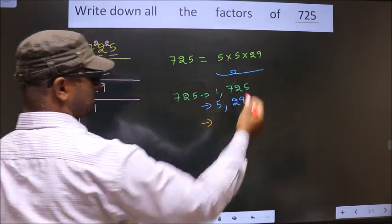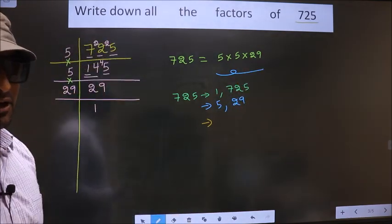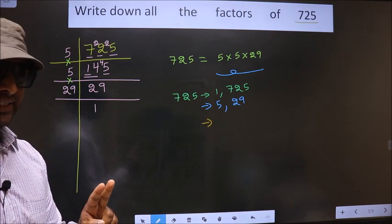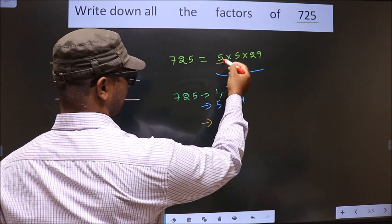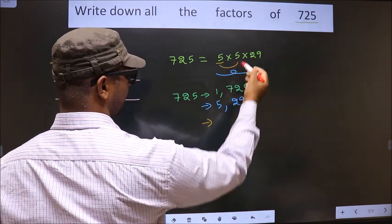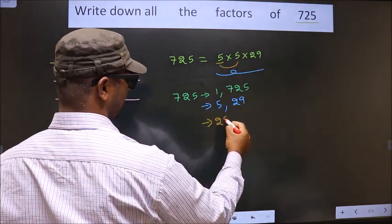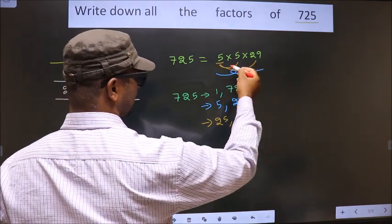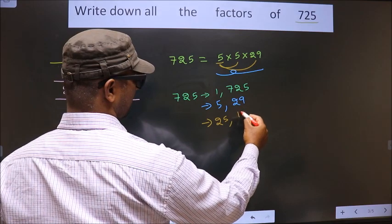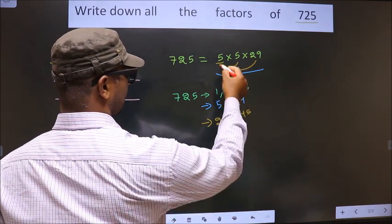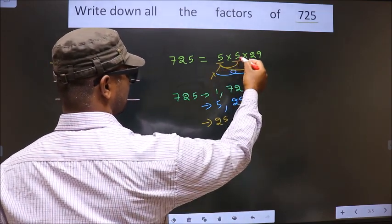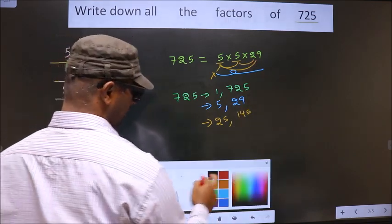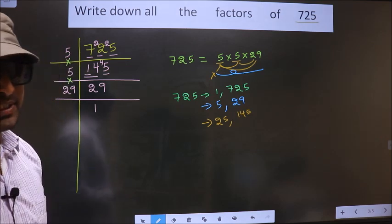Now, from these numbers, you take a combination of two numbers. How do we take it? First, I fix 5. I combine with 5, I get 25. Now, I combine with 29. So, 5 into 29 is 145. Now, you leave this 5, fix this 5, combine with 29, you get 145 itself. So, no other combinations possible.